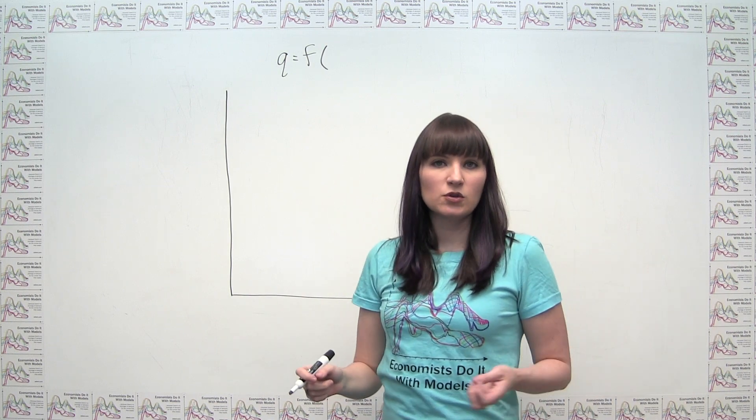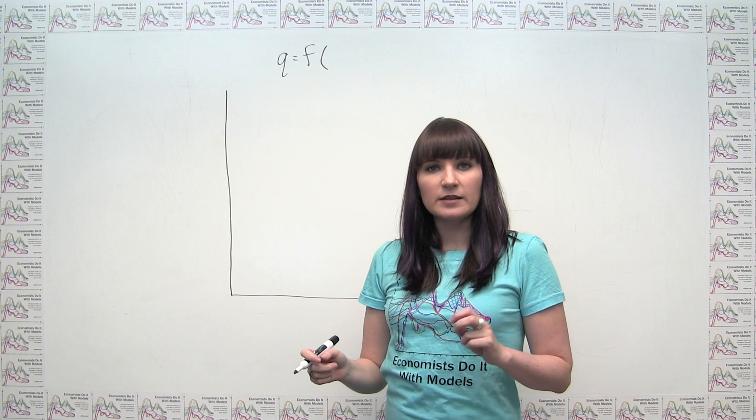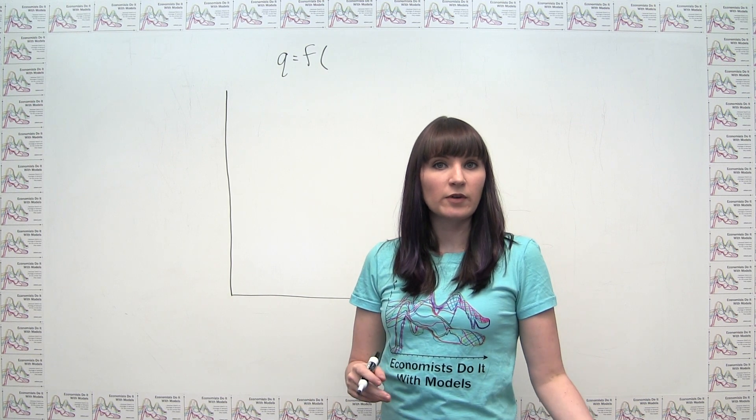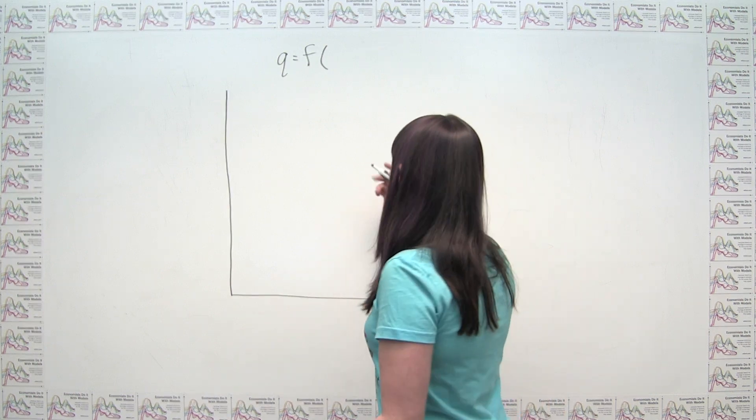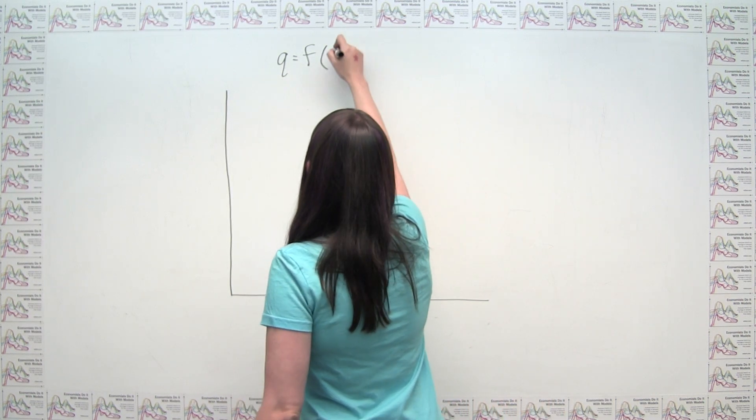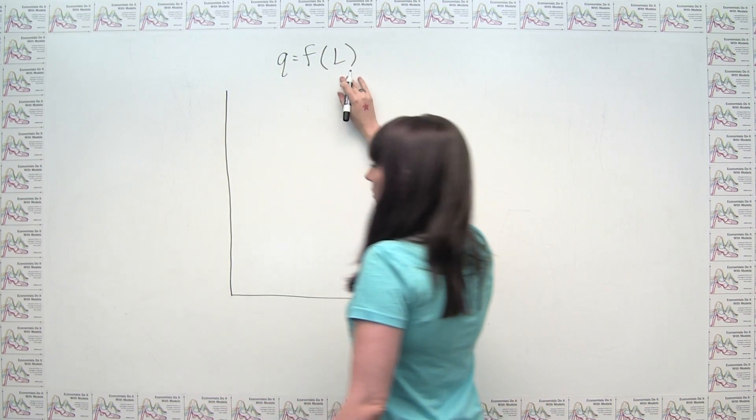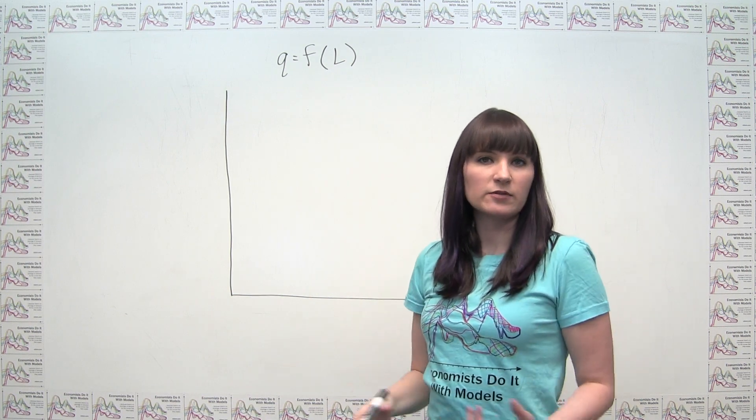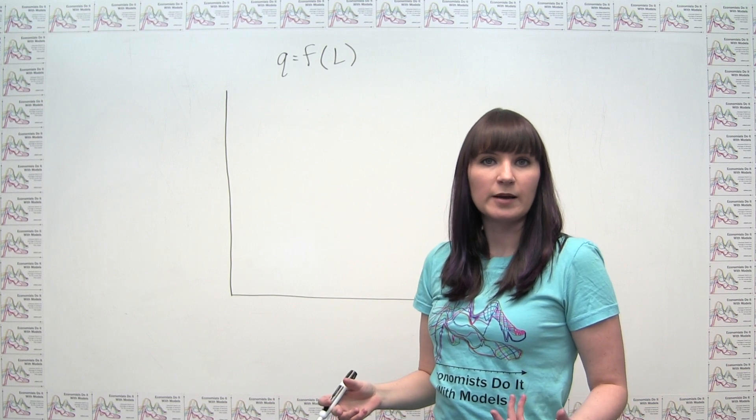What we typically assume in the short run is that the level of capital is fixed and the amount of labor is variable. So a short run production function would have quantity of output as a function of the units of labor that we're hiring, whether this be number of workers or hours of labor, days of labor, however you want to think about that.